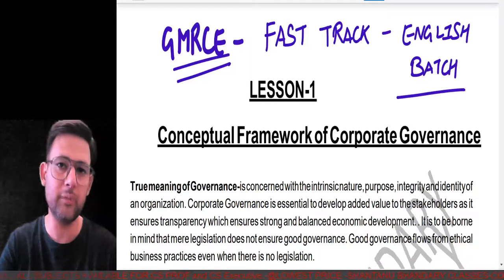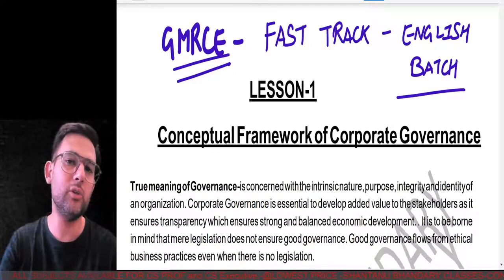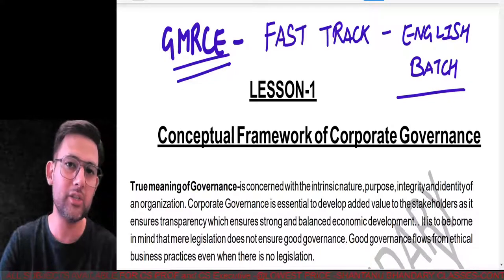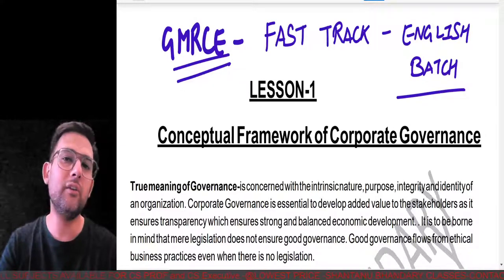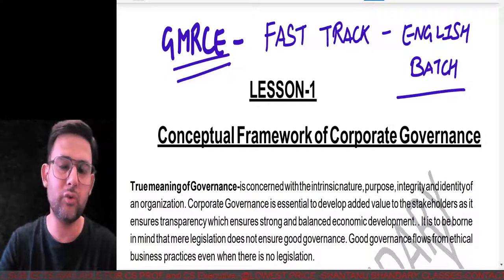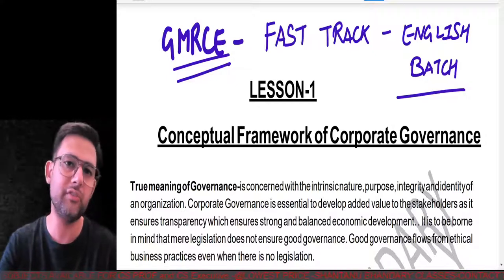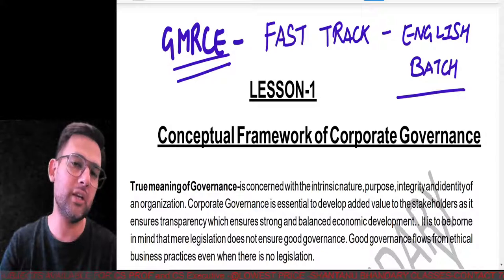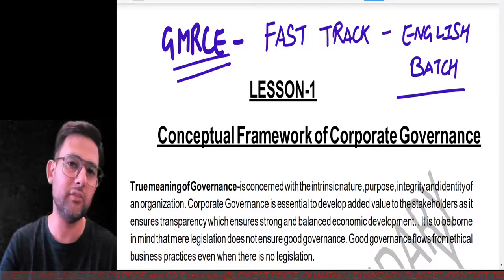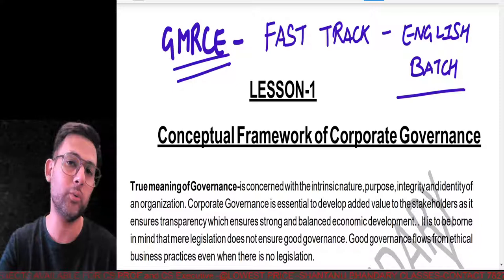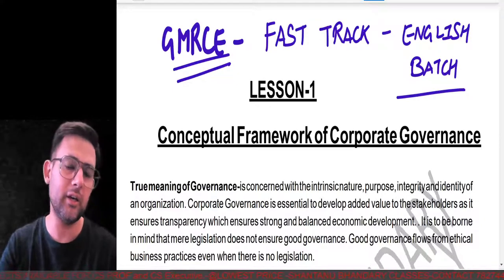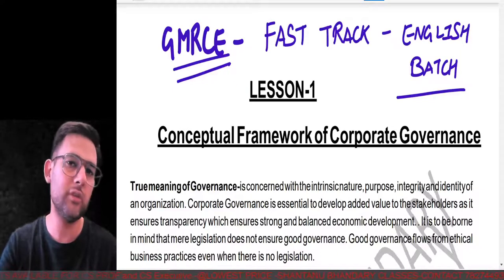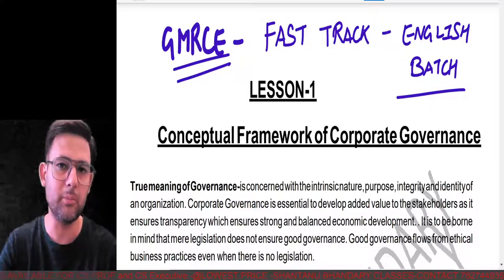Students who want to improve their English communication skills can also enroll for this batch. In this fast track revision series, we'll start from GMRC, then move to Drafting, then Group 2 consisting of SACMDD, CRIV, and RCD, then Group 3 consisting of Corporate Funding, MDCS, and IBC and Insolvency — covering all subjects one by one. But first, we start with GMRC.